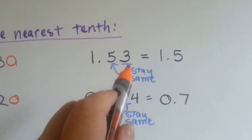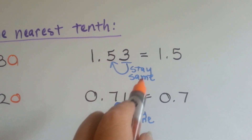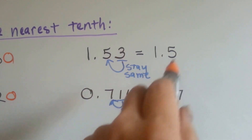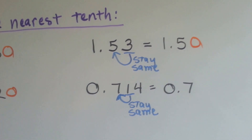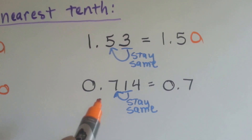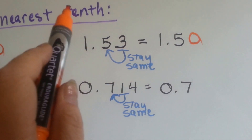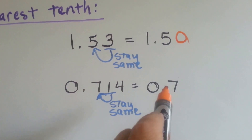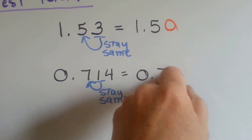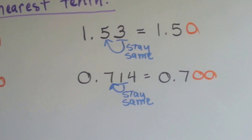For this one, the three tells the five to stay the same. So the three disappears, or we can put a zero there — it doesn't matter because the zero is just a placeholder. For seven hundred and fourteen thousandths, if we're going to round it to the nearest tenth, the one tells the seven to stay the same and then they all drop off. We could add zeros for the one and the four if we wanted to, but we don't have to because they're just placeholders.